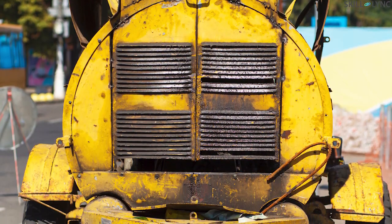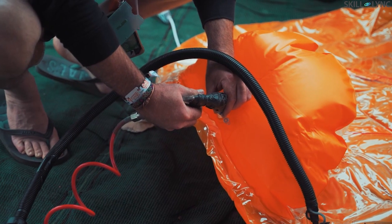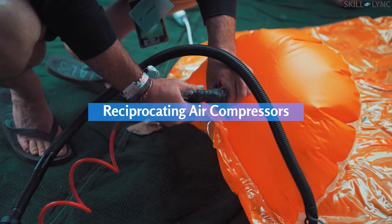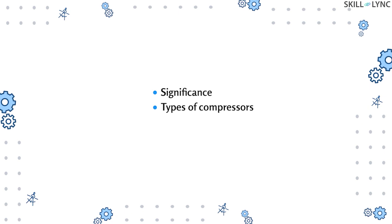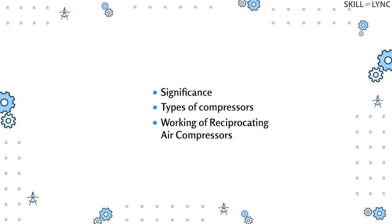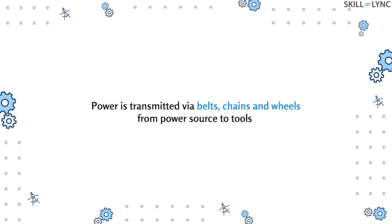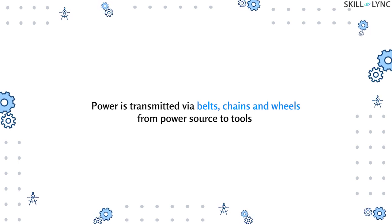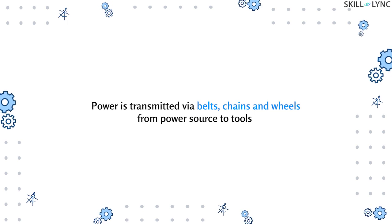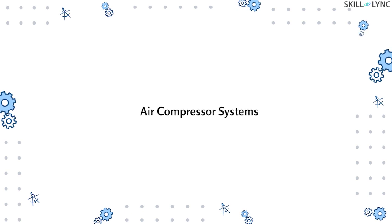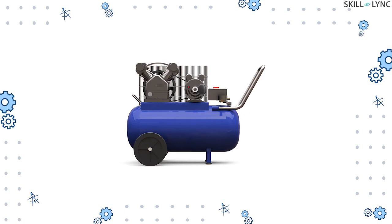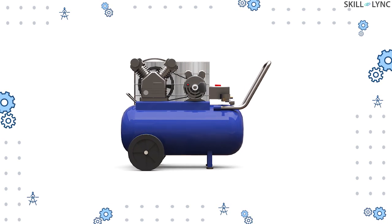In this video we are going to discuss reciprocating air compressors — we will be talking about the significance, types of compressors, and working of different types of reciprocating air compressors. Long back, industries and shops used a central source from where power is transmitted via belts, chains, and wheels to other machines and tools. These complex mechanical systems are now replaced by air compressor systems.